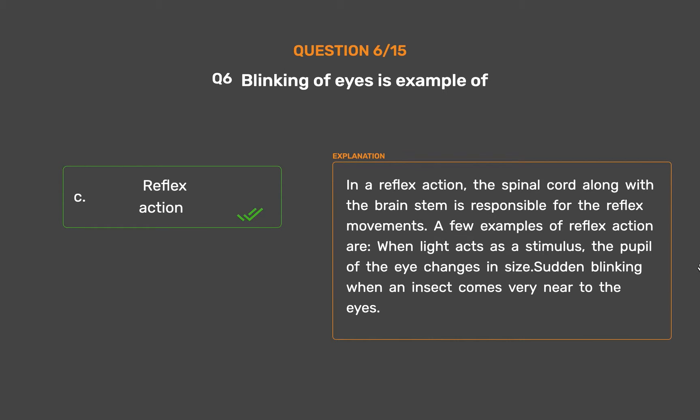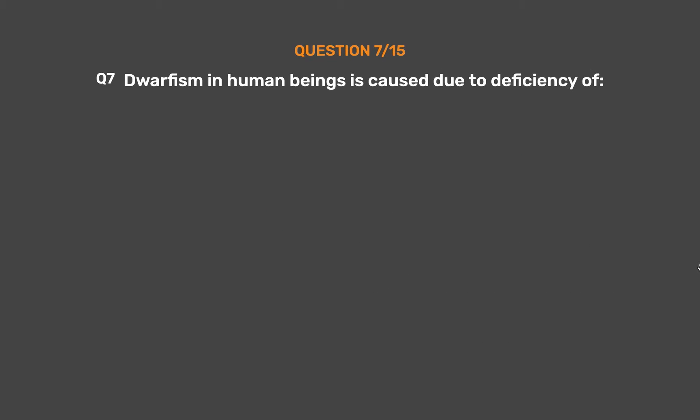When light acts as a stimulus, the pupil of the eye changes in size. Sudden blinking when an insect comes very near to the eyes.